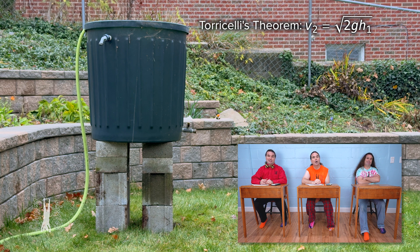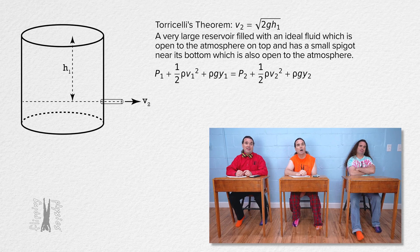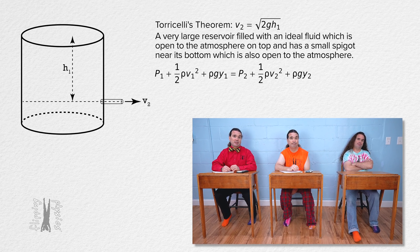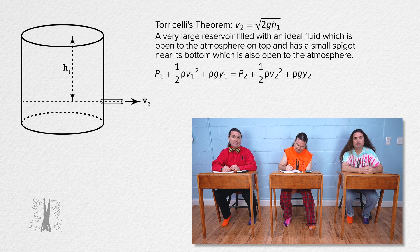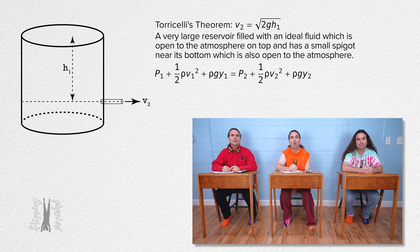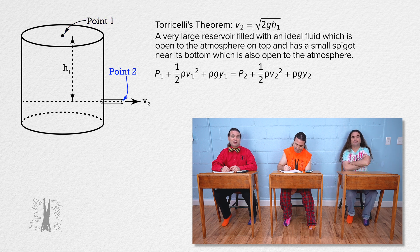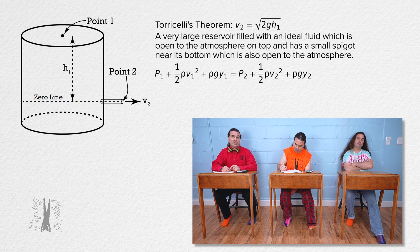Bernoulli's equation, which is on the equation sheet, states that pressure at point 1 plus one-half times the fluid density times the speed at point 1 squared plus fluid density times gravitational field strength times the vertical height of point 1 above the horizontal zero line equals that same thing with all the 1 subscripts changed to 2's. Let's identify point 1 at the top of the fluid, point 2 at the end of the spigot, and the horizontal zero line at the center of the spigot. Both points 1 and 2 are open to the atmosphere, so they are both equal to atmospheric pressure and cancel one another out.